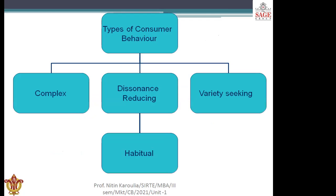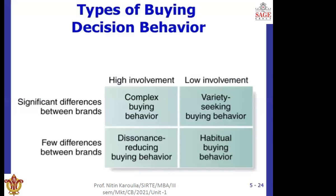Consumer behavior can broadly be categorized into four types: complex, dissonance-reducing, variety-seeking, and habitual. Complex buying behavior has high customer involvement in the product or service, and there are significant differences between brands. In variety-seeking buying behavior, the customer has low involvement. In dissonance-reducing buying behavior, there are few differences between brands — the customer identifies the problem, searches for alternatives, and with high involvement but few brand differences, this is called dissonance-reducing buying behavior.